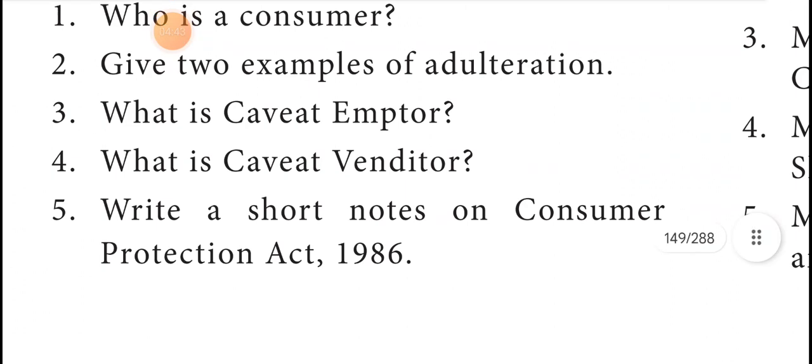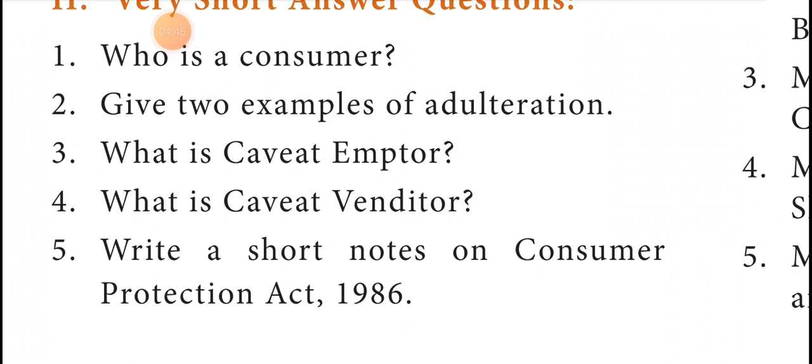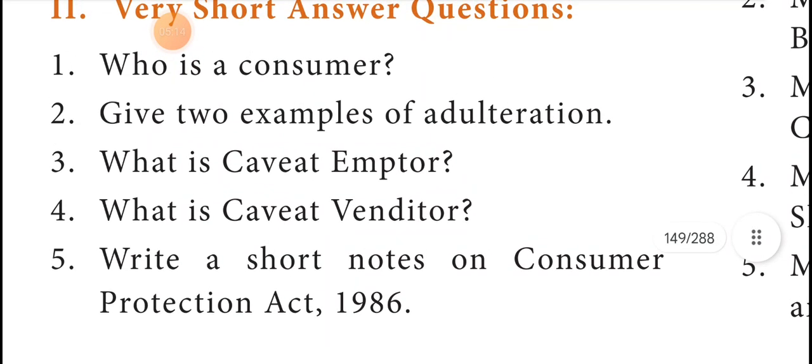What is Caveat Emptor? Caveat Emptor is the Latin term that means 'let the buyer beware.' Similar to the phrase 'sold as is,' this term means that the buyer assumes the risk that a product fails to meet the expectation or have defects. The principle of Caveat Emptor serves as a warning to buyers that they have no recourse with the seller if the product does not meet their expectation.